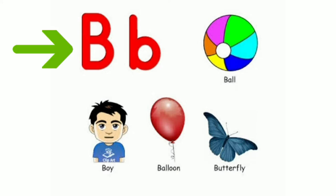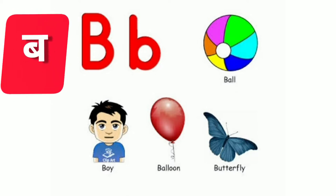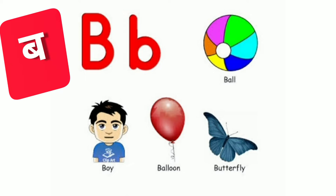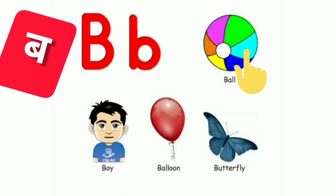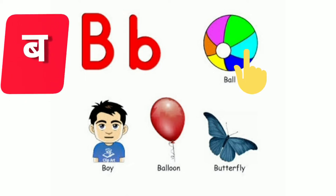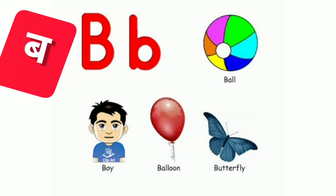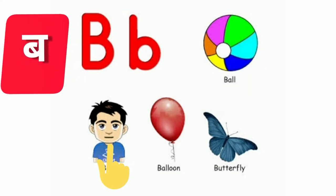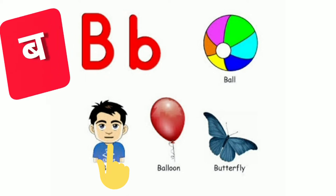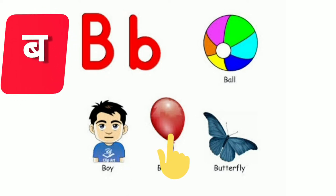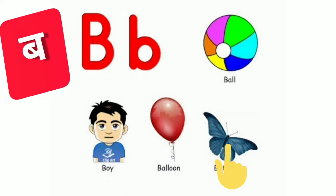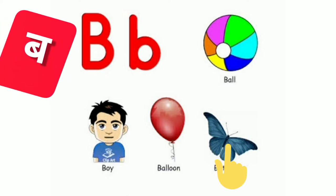The second letter is B. The sound of B is B. Ball. Boy. Balloon. Butterfly.